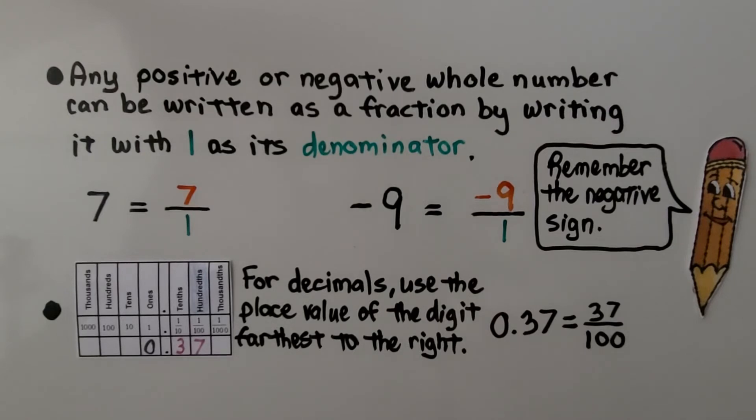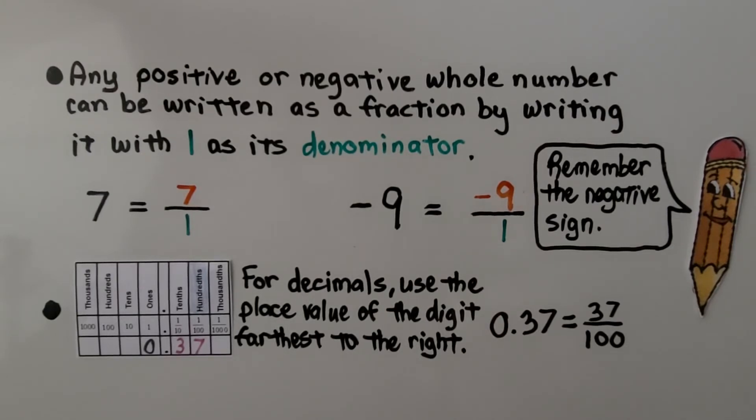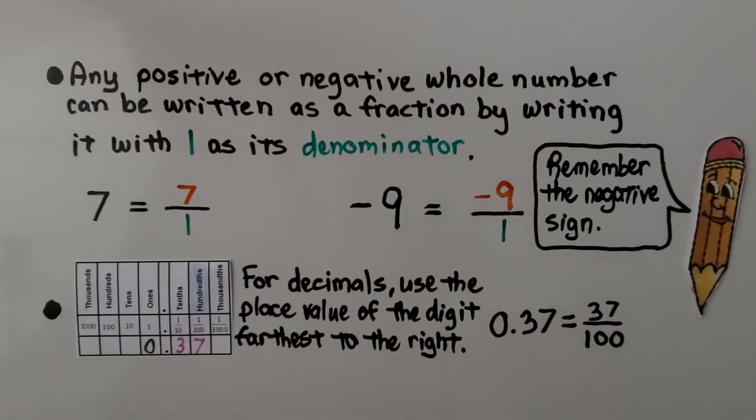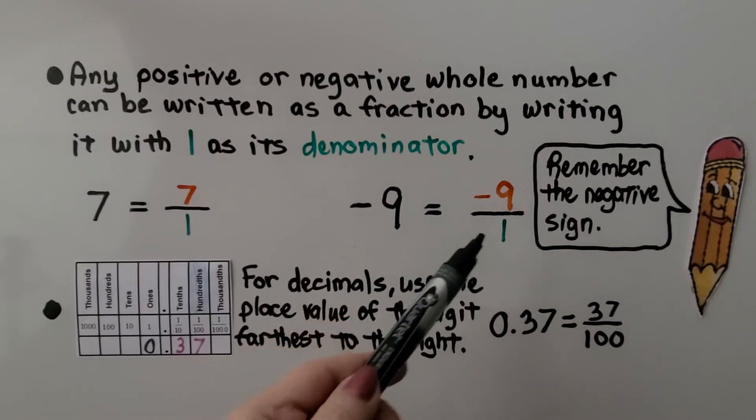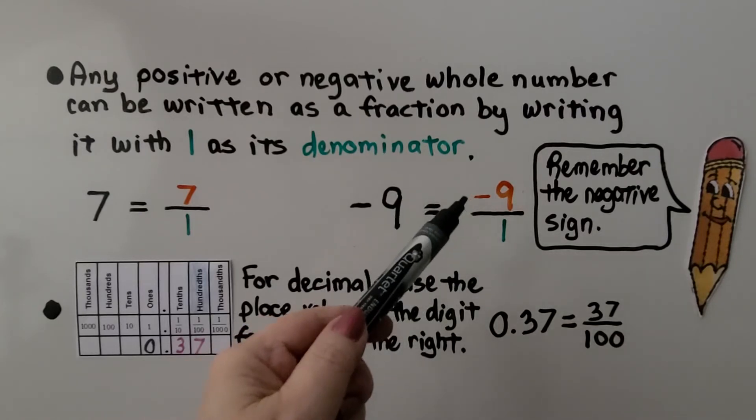Any positive or negative whole number can be written as a fraction by writing it with 1 as its denominator. If we have 7 and we want to write it as a fraction, we just write it as 7 over 1. If we have a negative 9, we just write it as negative 9 over 1. Just remember that negative sign.